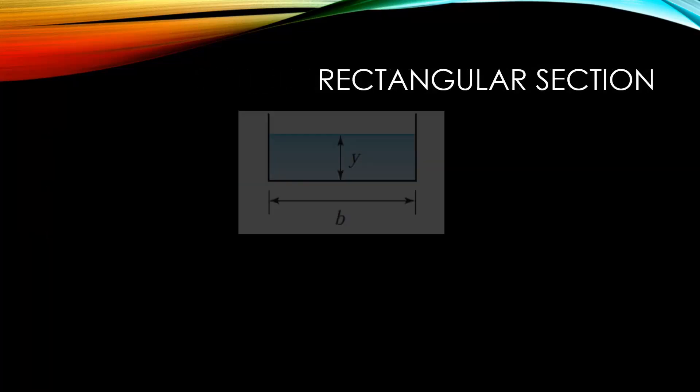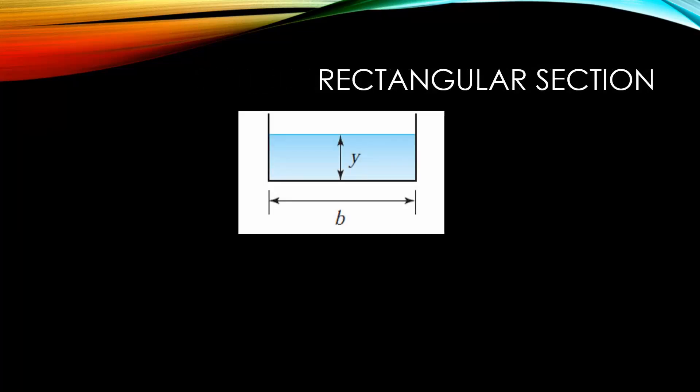Let's consider a rectangular section with a base width B and a depth Y. We can calculate the flow area by taking the product of the base times the depth. We can calculate the wetted perimeter by taking the sum of the base plus twice the depth. We've already covered this when we looked at irregular cross-sections in the energy equation.